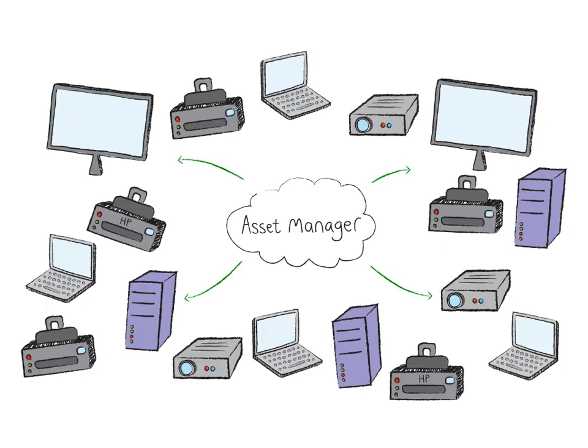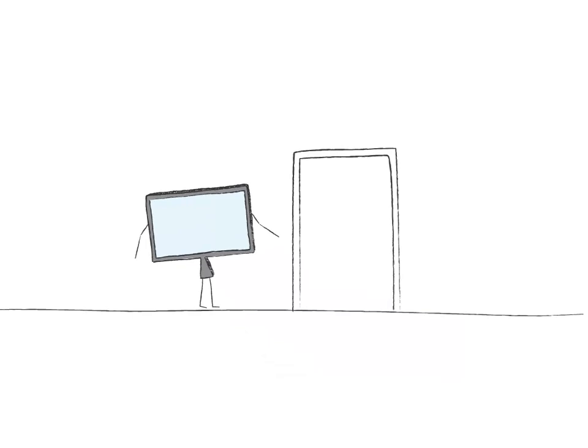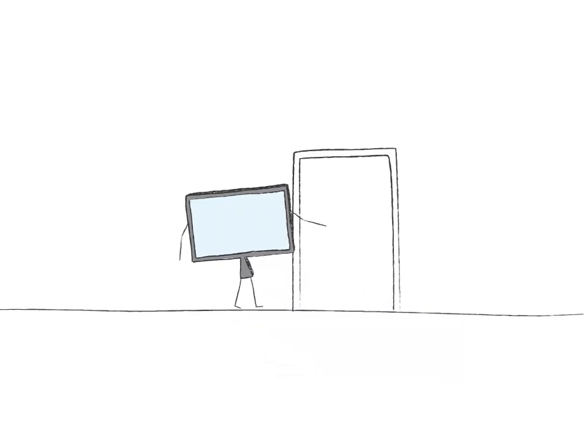It doesn't need an agent on the PCs, and you don't even need to get out of your chair. It gathers important information such as serial numbers, specifications and configurations. It will even discover what software is installed on each machine. And it finds the geographic location of your hardware, so when assets go walkies, you can track them down.